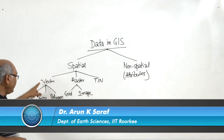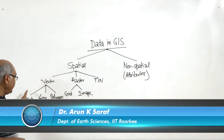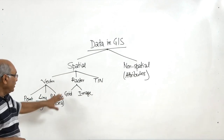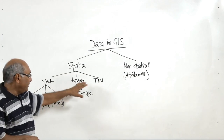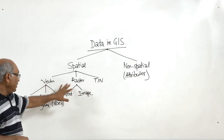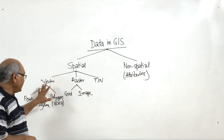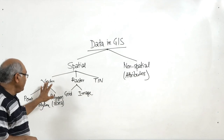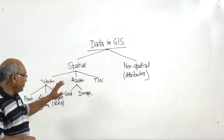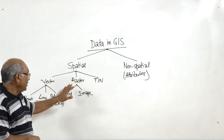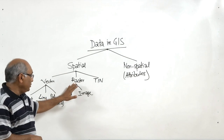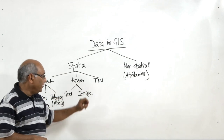We have already covered vector data, different types of vector data, raster data, and TIN data. We have also discussed the comparison between vector data and raster data, and also gone through the comparison between raster and TIN.